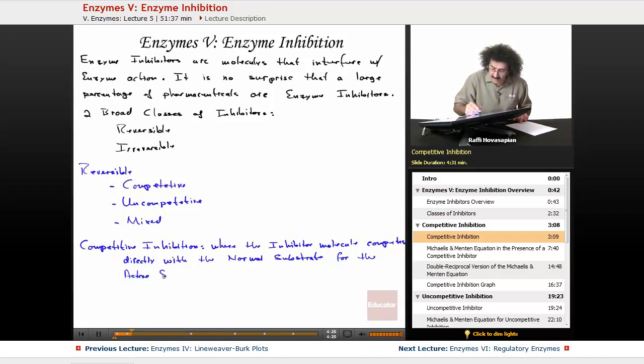So they both want to be in the active site - substrate and competitor. If substrate makes it, the enzyme does what it does. If the competitor makes it to the active site before the substrate does, it blocks off entrance to the active site for the normal substrate.